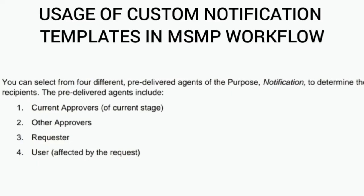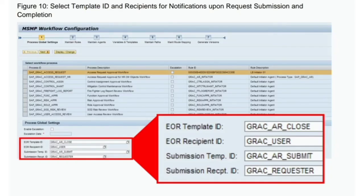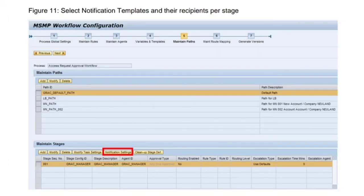Additional agents can also be added if needed. For example, with the workflow process SAP Access Request selected — noting that Access Request and Access Request HR are the only work processes with message class templates for request submission and request close — notifications can be maintained as global notifications. As shown, you can use the end-of-request template and the submission template ID, replacing either the standard or custom template ID you have created.